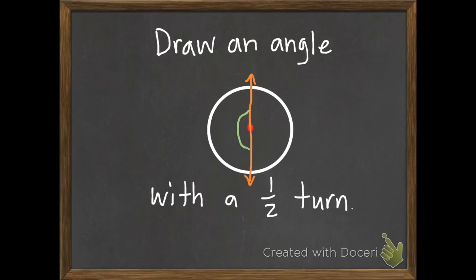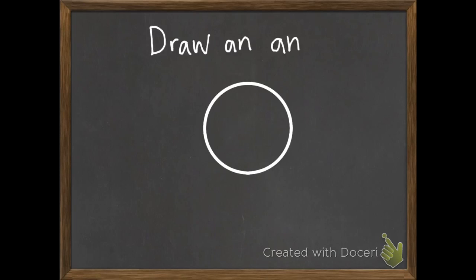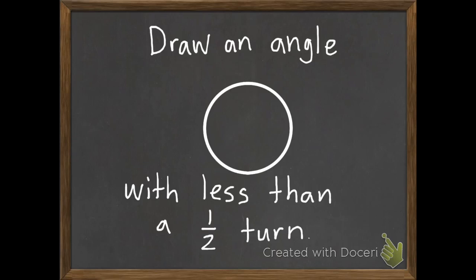Here's the second one I want you to do with me. I want you to draw an angle with less than a one-half turn. Once again, pause, unpause when you've had it drawn, so you can check to see how you did.